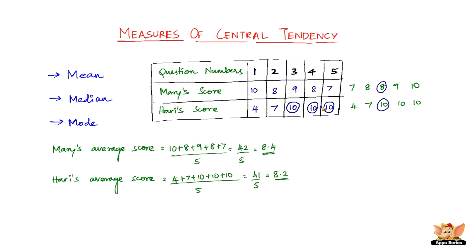The methods that they've used: this method is nothing but the mean, this method is nothing but the median, and the final method Hari used is nothing but the mode. This is what is mean, median, and mode.